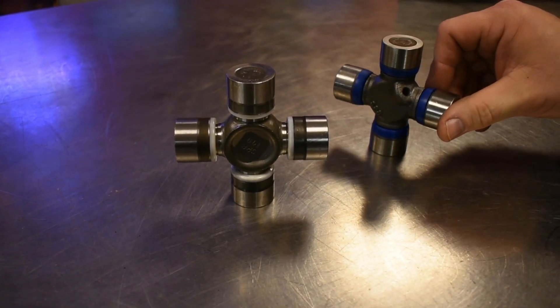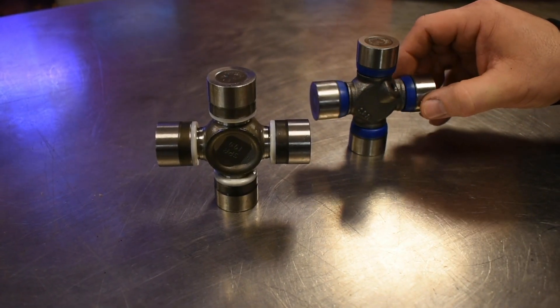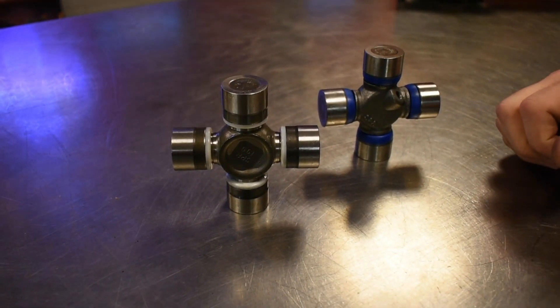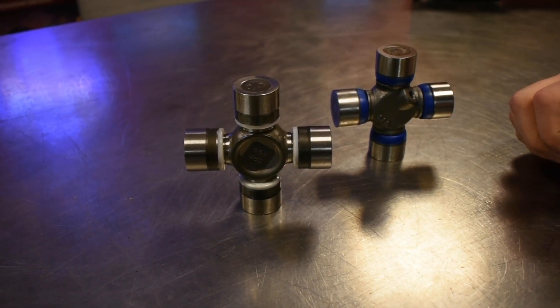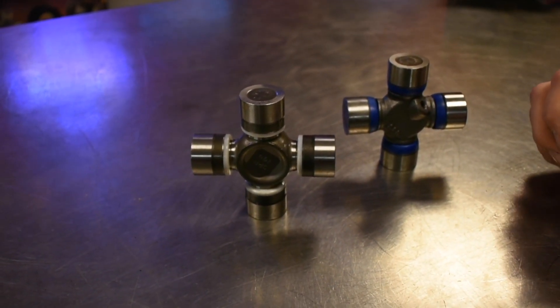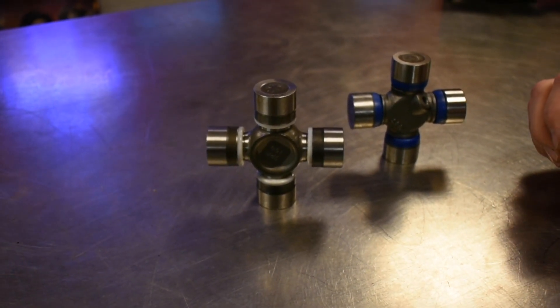This one's obviously got a grease fitting hole. What makes this u-joint and this u-joint so different are about three or four different things that people are just not really made aware of.